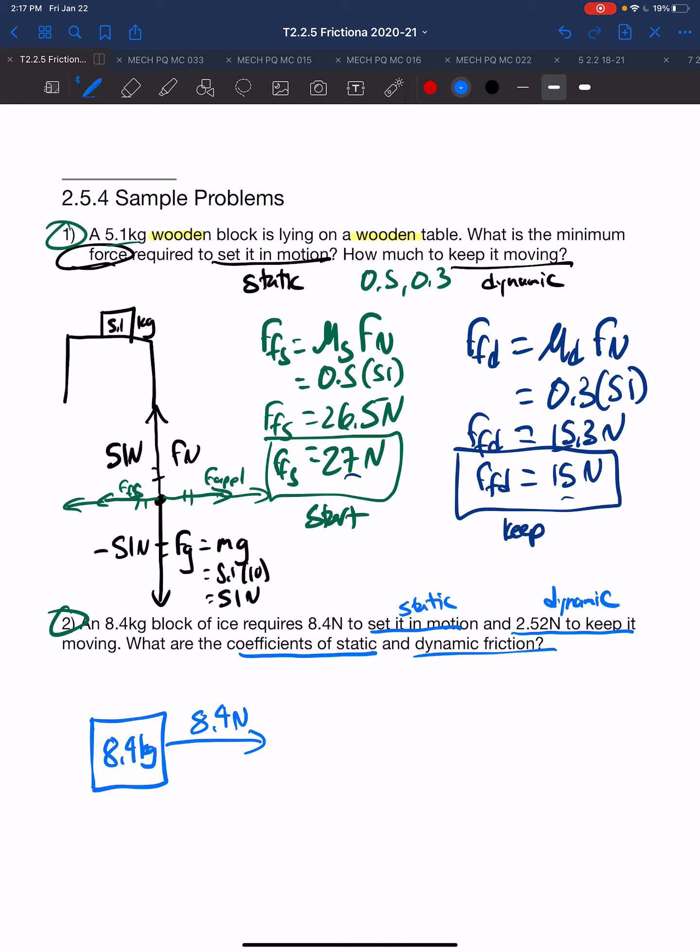We need to start with our free body diagram, as we have in the past. Force of gravity is mg, so 8.4 times 10 is 84 newtons. So we have a force of gravity of minus 84 newtons. The block of ice is not accelerating up or down, so the forces are balanced. Force normal is equal and opposite to the force of gravity, so it is a positive 84 newtons.